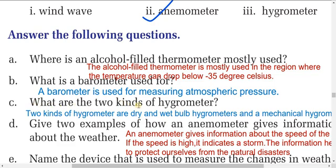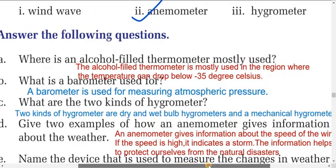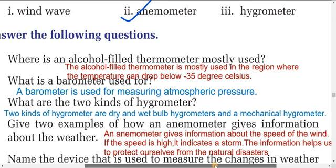What are the two kinds of hygrometer? The two kinds of hygrometer are the dry and wet bulb hygrometer and the mechanical hygrometer.